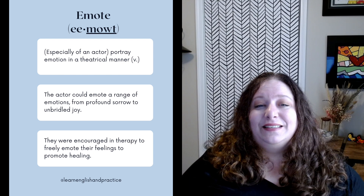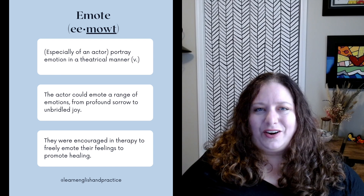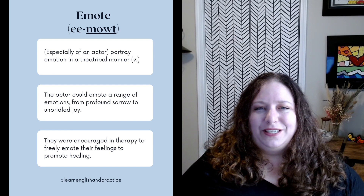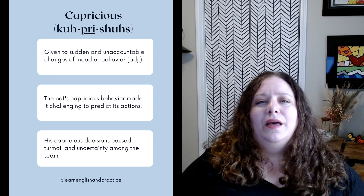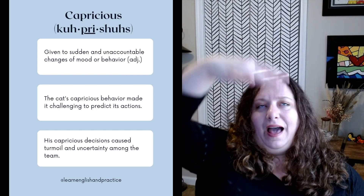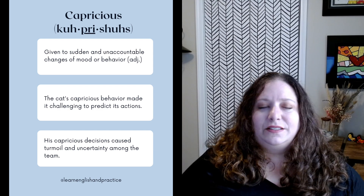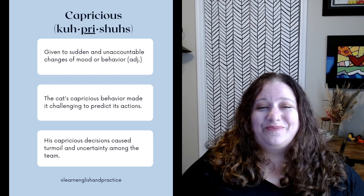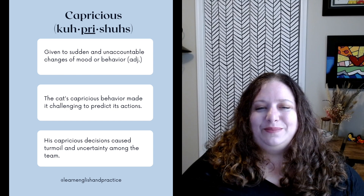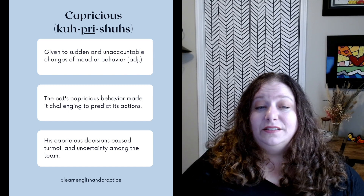Capricious. This means given to sudden and unaccountable changes in mood or behavior — it's an adjective. Someone who's capricious tends to change very dramatically. They might do things on a whim. Their mood could be at high highs and low lows, and someone capricious is known to be kind of impulsive or frequently changing. Examples: the cat's capricious behavior made it challenging to predict its actions. His capricious decisions caused turmoil and uncertainty among the team.